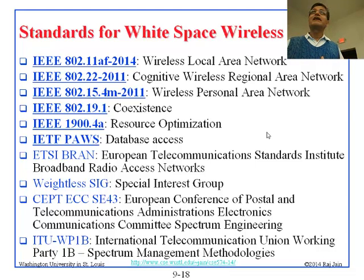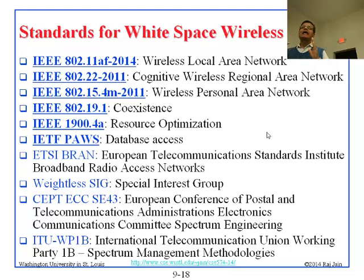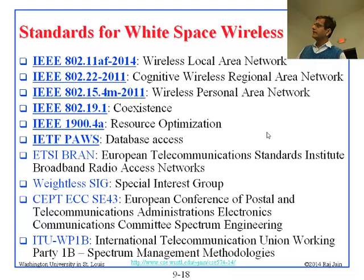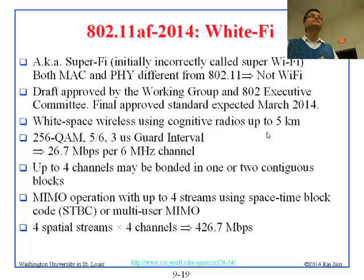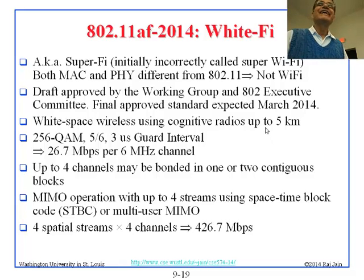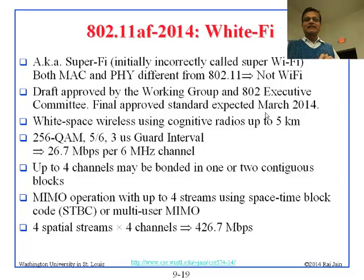We will focus primarily on the US-centric IEEE work, specifically the wireless LAN — 802.11af, also called Super Wi-Fi. The standard was expected to come out in March 2014, which at the time of this lecture is next week, so we are studying it just before it comes out. The FCC originally called this Super Wi-Fi, but the Wi-Fi Alliance said 'this is our trademark, you cannot use it,' so it is now called Super Fi.